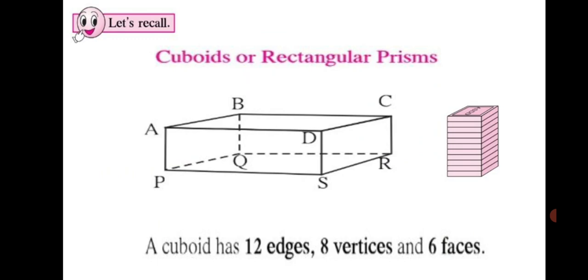Now here in this figure you can see all the faces of a cuboid are rectangular and its opposite faces are identical or congruent. The cuboid is also a quadrangular prism.